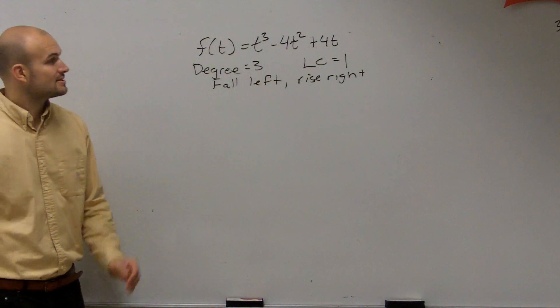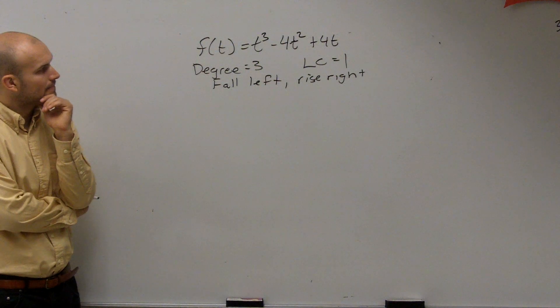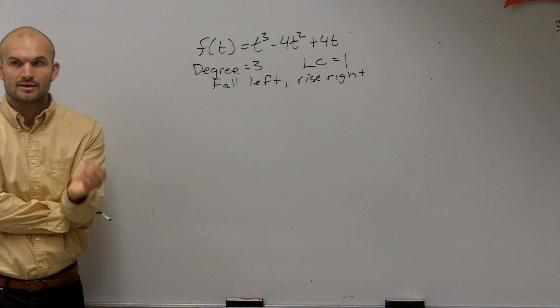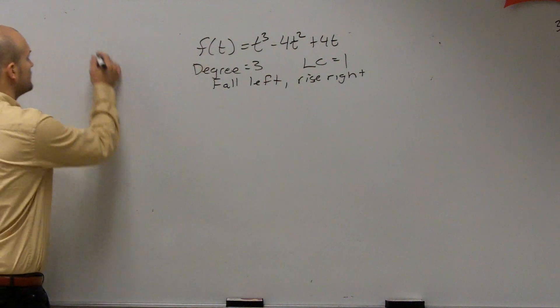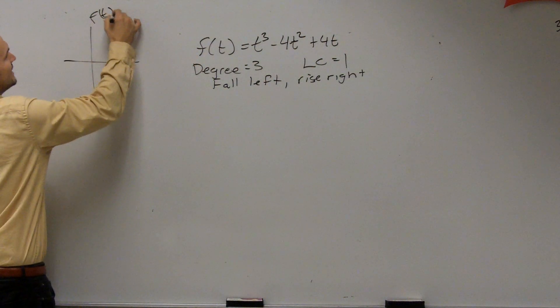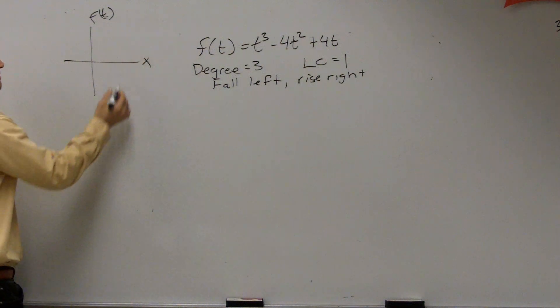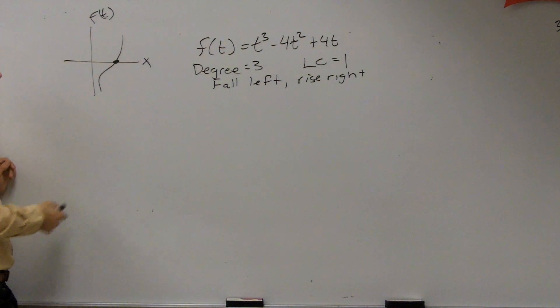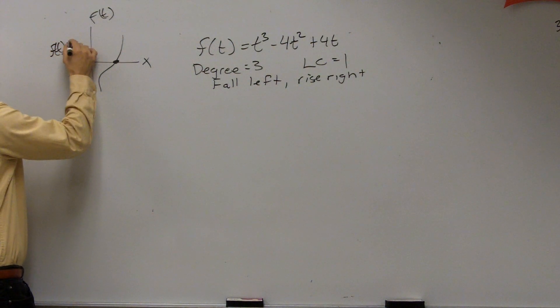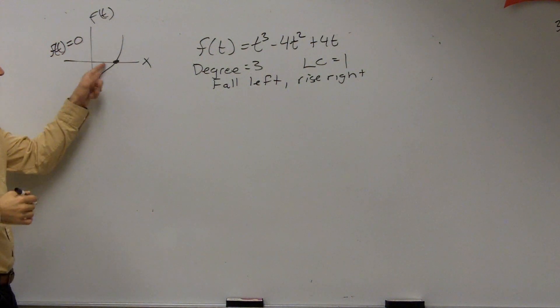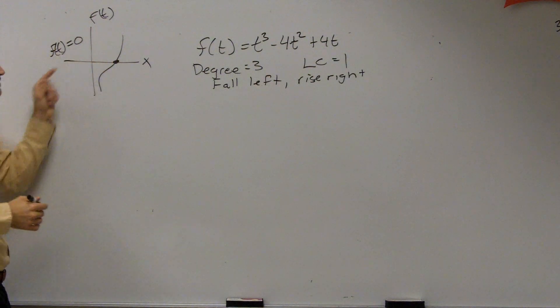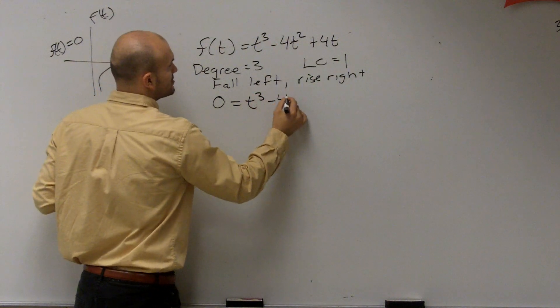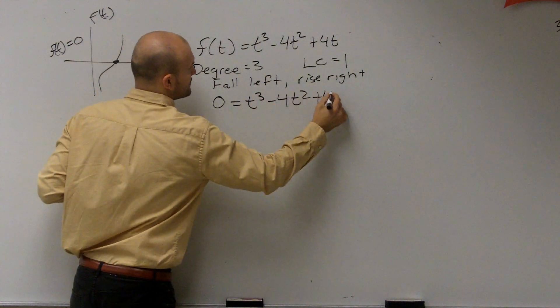Now, the next thing is we need to find the zeros. Remember, the zeros are your x-intercepts, right? That means the output value, this is f of t, and this is x. We want to find where does it cross? So that means f of t equals zero. We want to find out where it crosses, f of t is equal to zero. So I say zero instead of f of t equals t cubed minus 4t squared plus 4t.